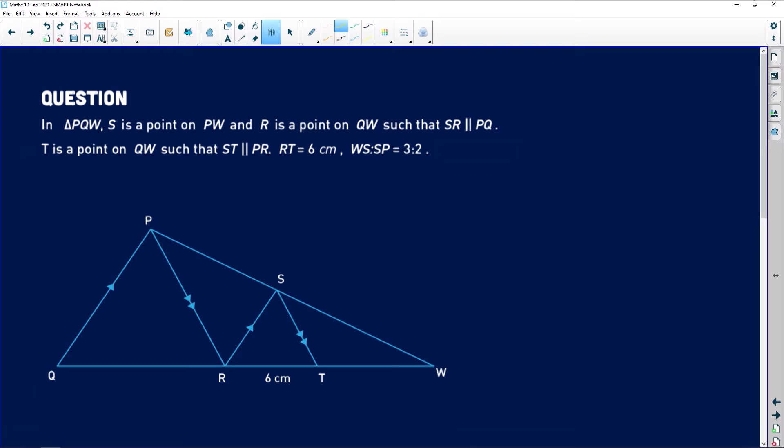There's another pair of parallel lines which is SR and PQ. We can see all that. Now we are told that RT is equal to 6 centimeters. Only this small piece that you're looking at from here to there is equal to six units. There's an important piece of information: we are told that WS to SP equals 3 is to 2. Now the other way of writing that is to say WS divided by SP is the same as 3 divided by 2.